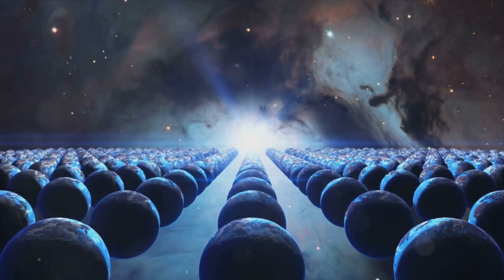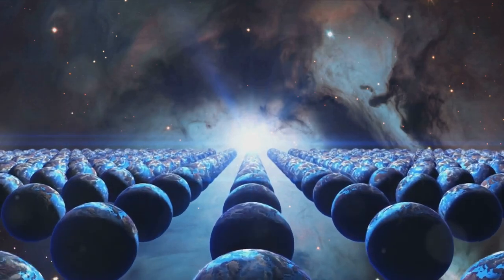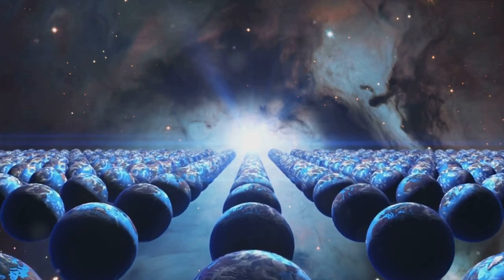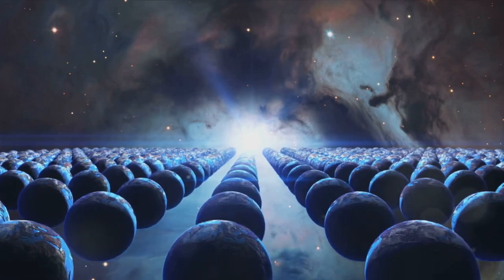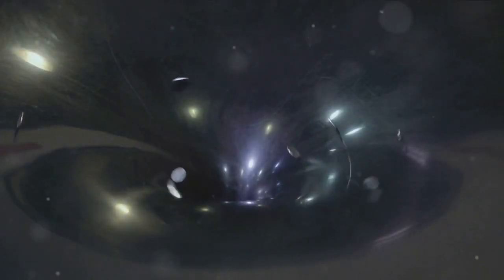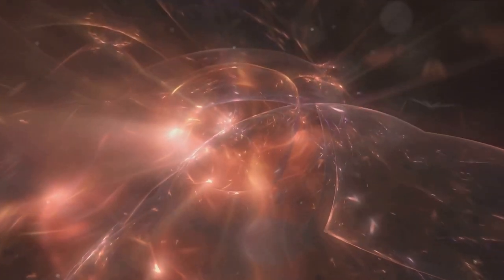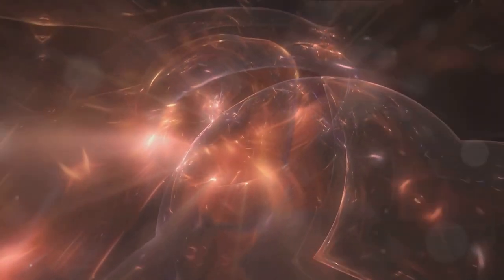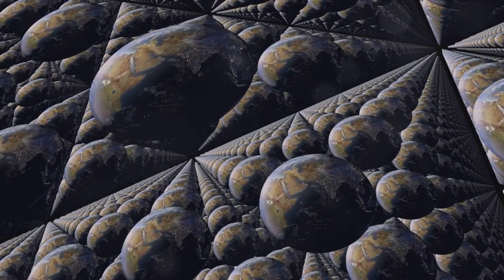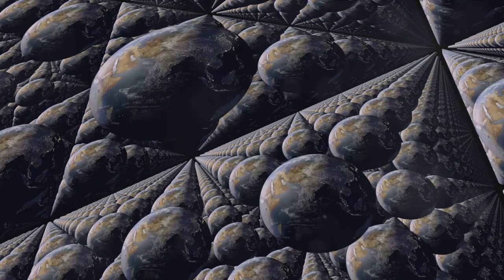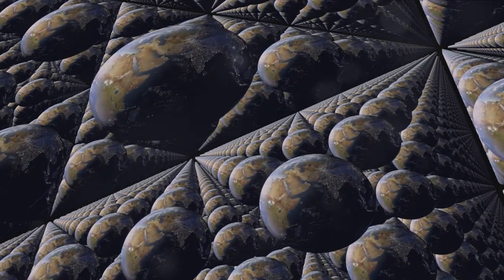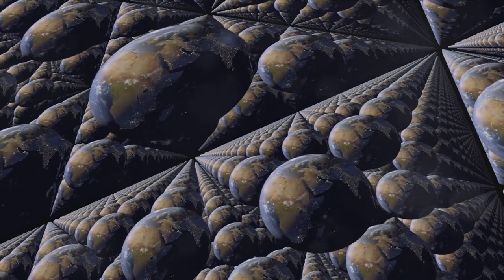In layman's terms, for every decision that's made, the universe splits into different paths, each with its own reality. To illustrate, imagine flipping a coin. In our universe, it lands on heads. But according to the many worlds interpretation, there's another universe where it landed on tails. Every possibility is played out somewhere across the multiverse. It's a mind-boggling concept, but it's one that some quantum physicists take very seriously.